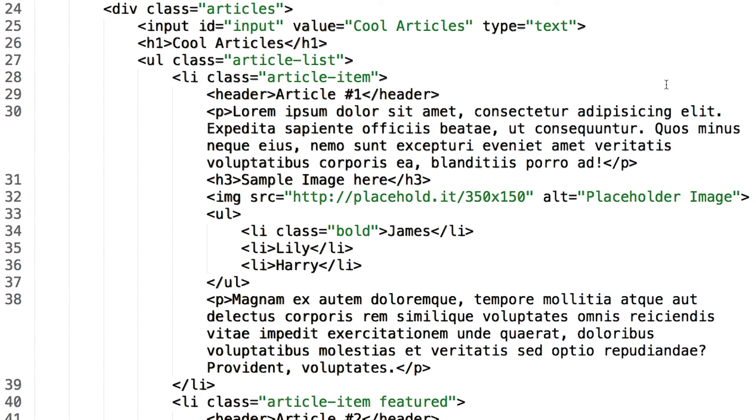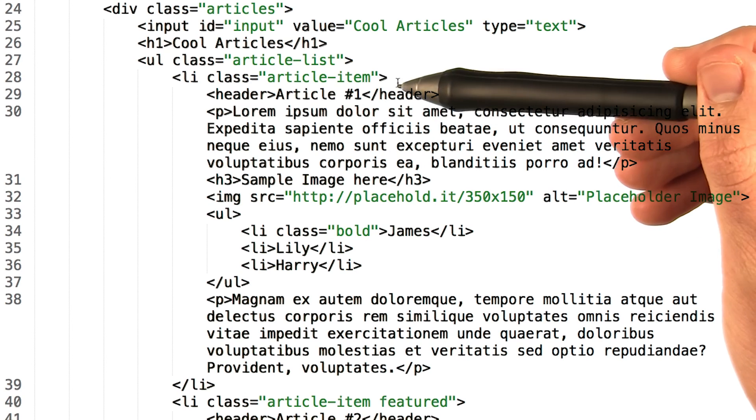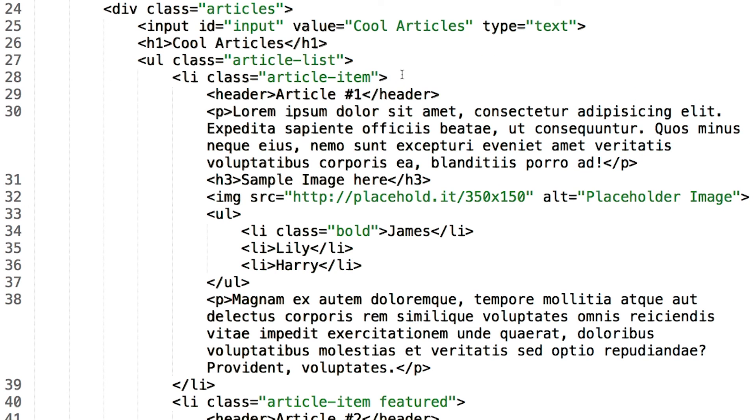For this quiz, you'll be working with the sample page again. I want you to select all elements of the class article item and save them to variable articles. Once again, you can check your work by console.logging the resulting jQuery collection.